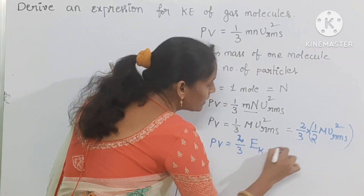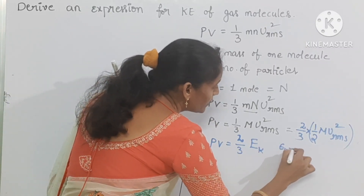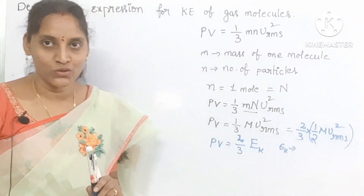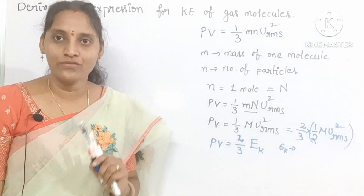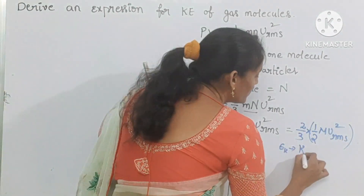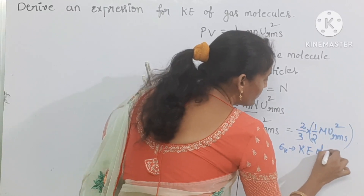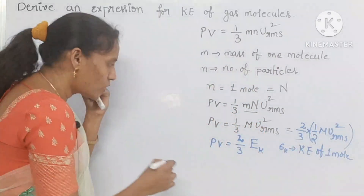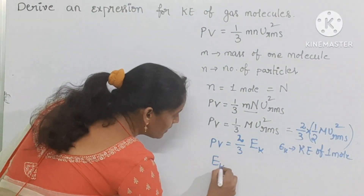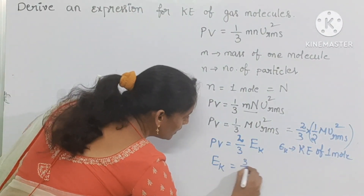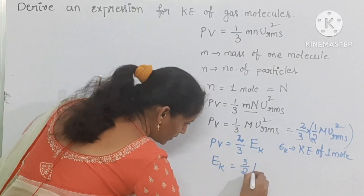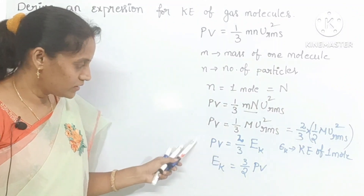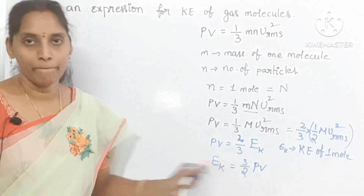Here E_K is the kinetic energy of 1 mole of molecules. So you can extract the E_K value: E_K equal to 3 by 2 PV. If you send 2 by 3 to the other side, you will get 3 by 2 PV.